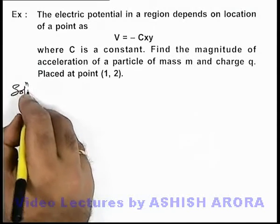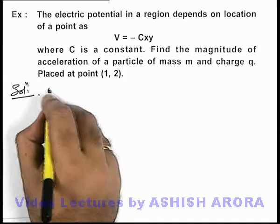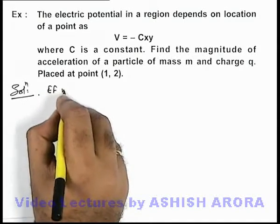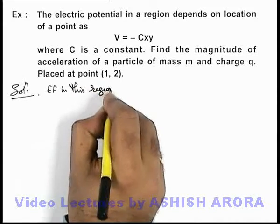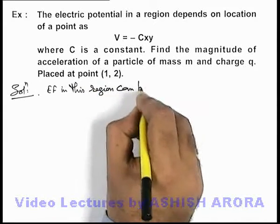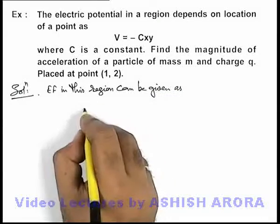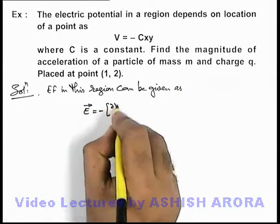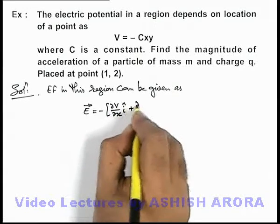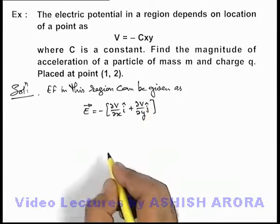Now in this situation, we can first find out the magnitude of electric field in the region. We can write electric field in this region can be given as E vector = -[(∂V/∂x) î + (∂V/∂y) ĵ], this we already studied.